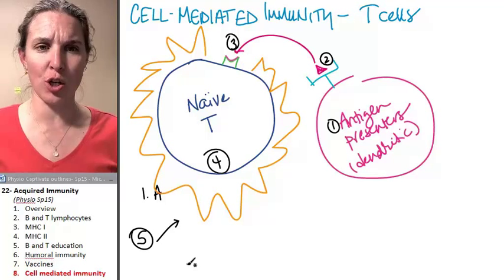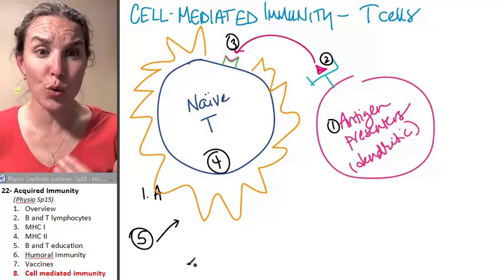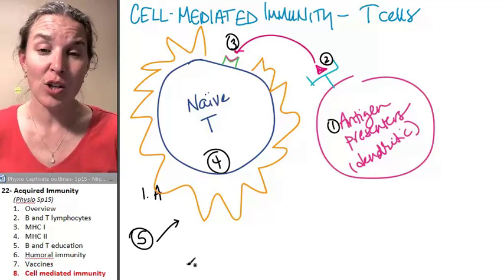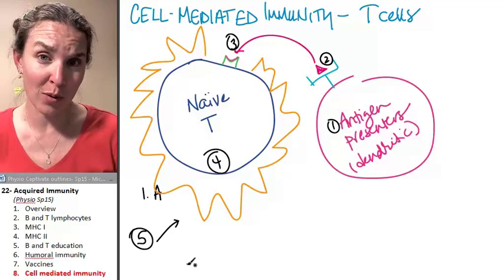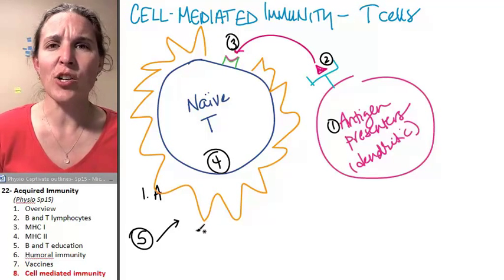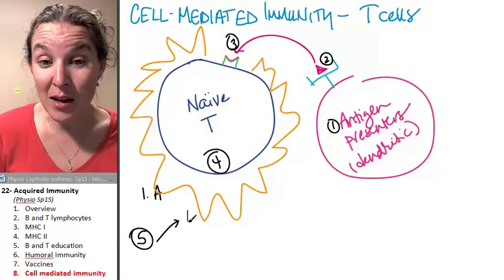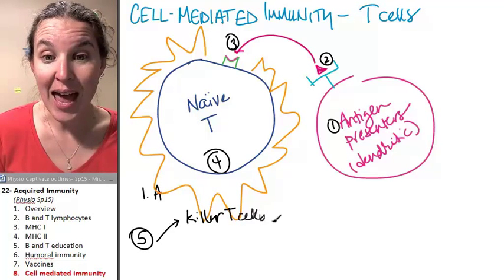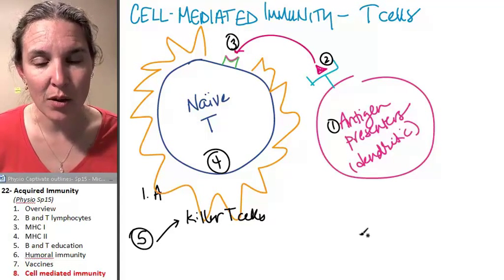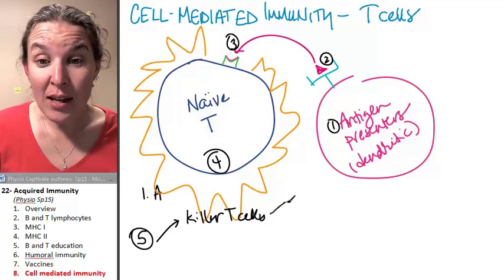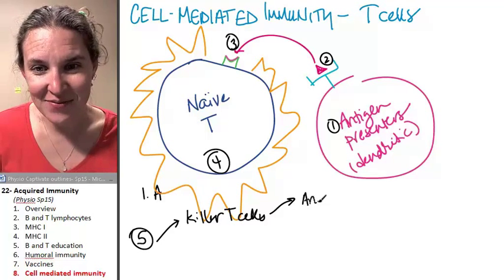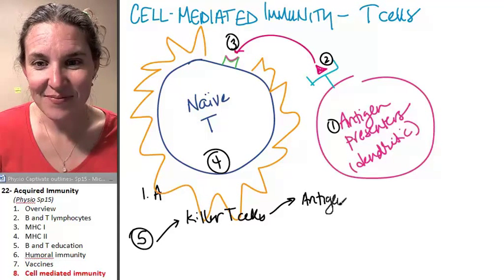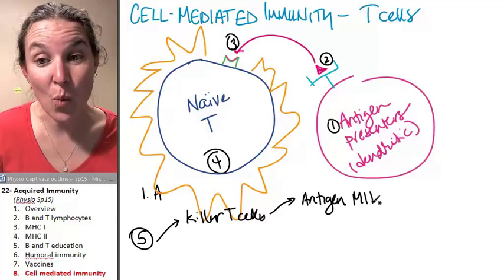if you're a mature grown-up T cell, like truly grown-up, like now you can go out and kill people, that kind of a grown-up, what kind are you going to become? Well, some of them become killer T cells. And guess what killer T's do? They go in,